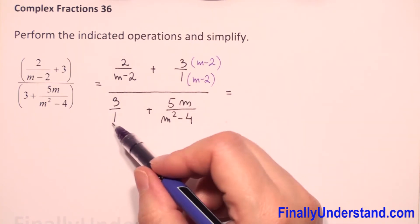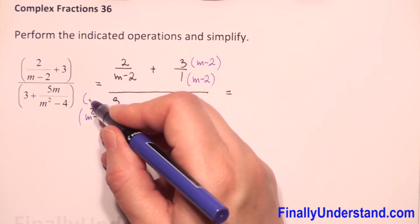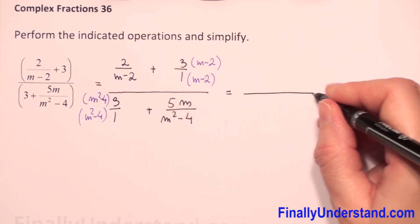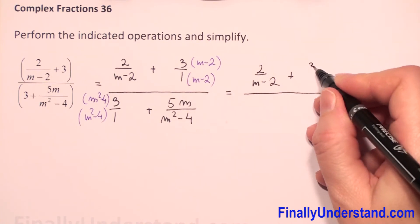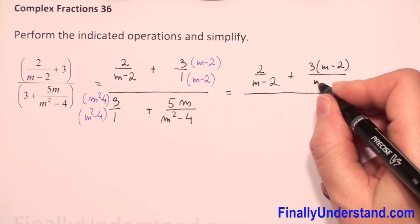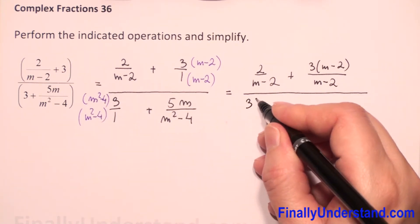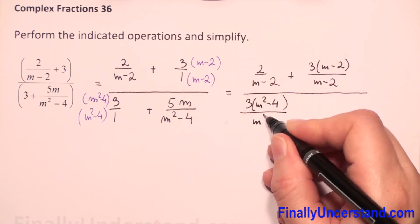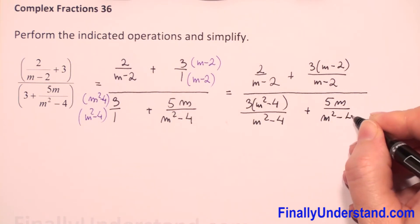I have to multiply 1 times (m squared minus 4). So now: first fraction 2 over (m minus 2), plus 3 times (m minus 2) in the denominator — 1 times (m minus 2) is (m minus 2) — and we will have 3 times (m squared minus 4) over 1 times (m squared minus 4) is (m squared minus 4), and we have plus 5m over (m squared minus 4).